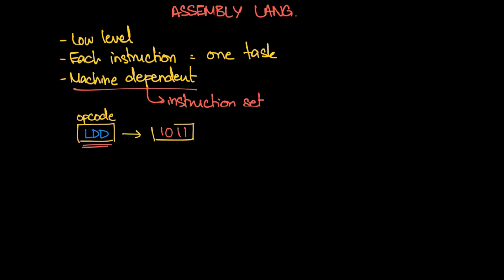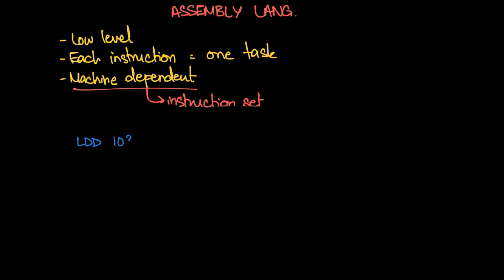The operand is the thing being operated on. In the case of LDD 103, LDD is basically direct loading — it means take whatever is in memory address 103 and store it in the accumulator. So 103 is the operand, specifically a memory address. This is decimal but it represents the memory address.